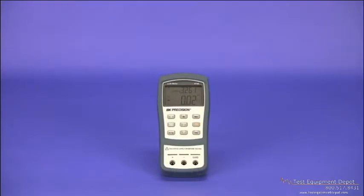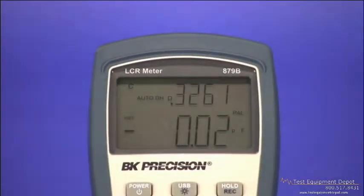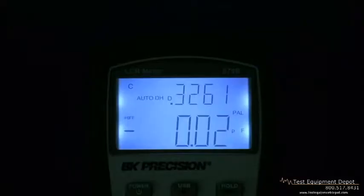Both meters feature large, easy to read primary and secondary displays with 40,000 and 10,000 counts respectively. The model 879B's display features a bright, evenly lit backlight.